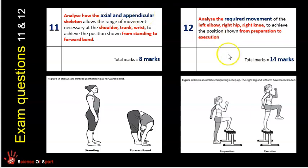Moving on to question 12. Each question 12 is a 14 mark analysis question. This time it doesn't specify the skeletal factor — it says analyse the required movement. So this is an indication that they want more from you than the skeletal system. This requires you to analyse not just the skeletal system, but how the muscular system contributes towards the movement they want you to focus on.